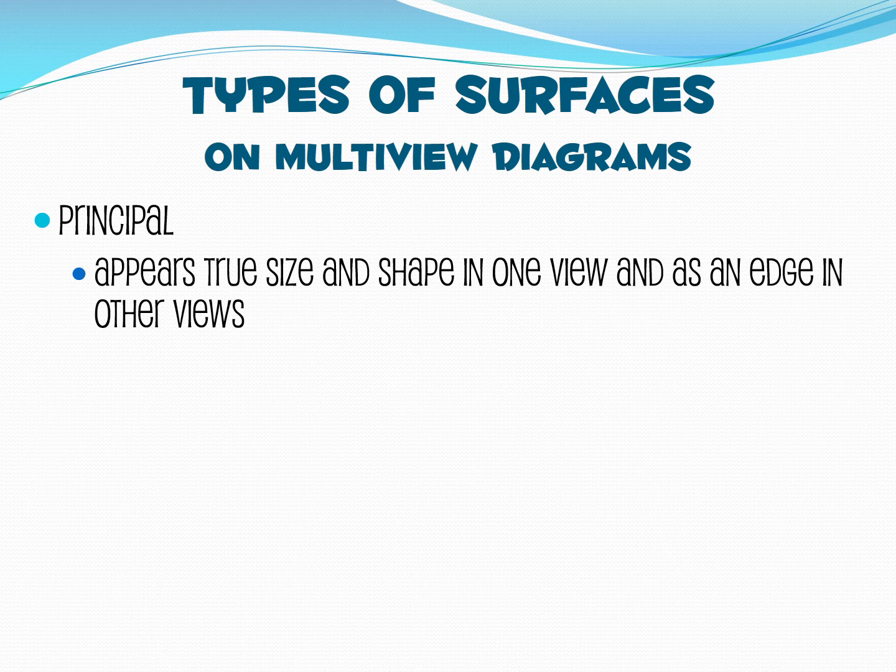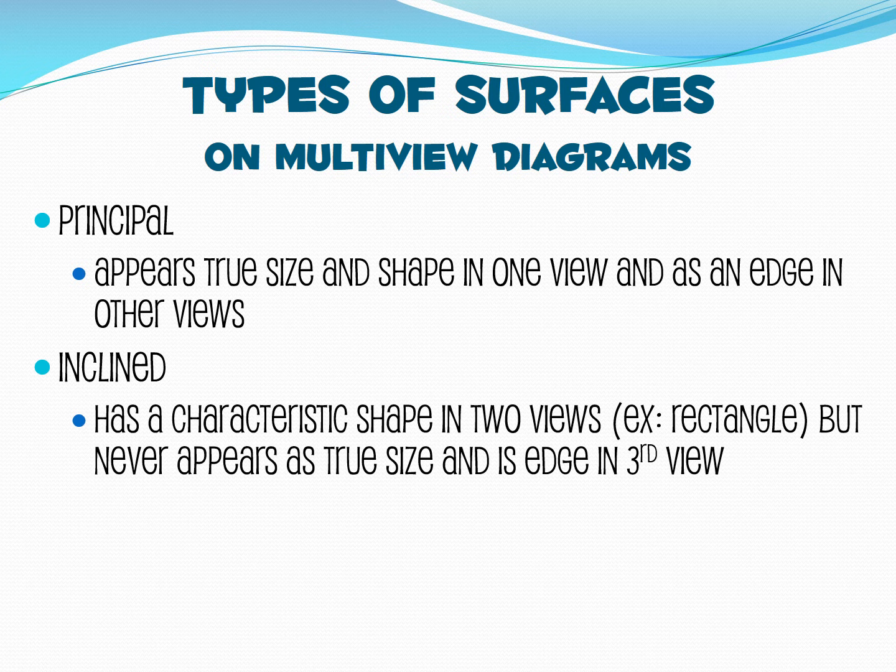The first type of surface is called a principal surface. It appears as its true size and shape in one of the three views and as edge in the others. The next type of surface is an inclined surface. This has a characteristic shape in two of the views, commonly a rectangle, but it never actually appears as its true size and also it's an edge in the third view.